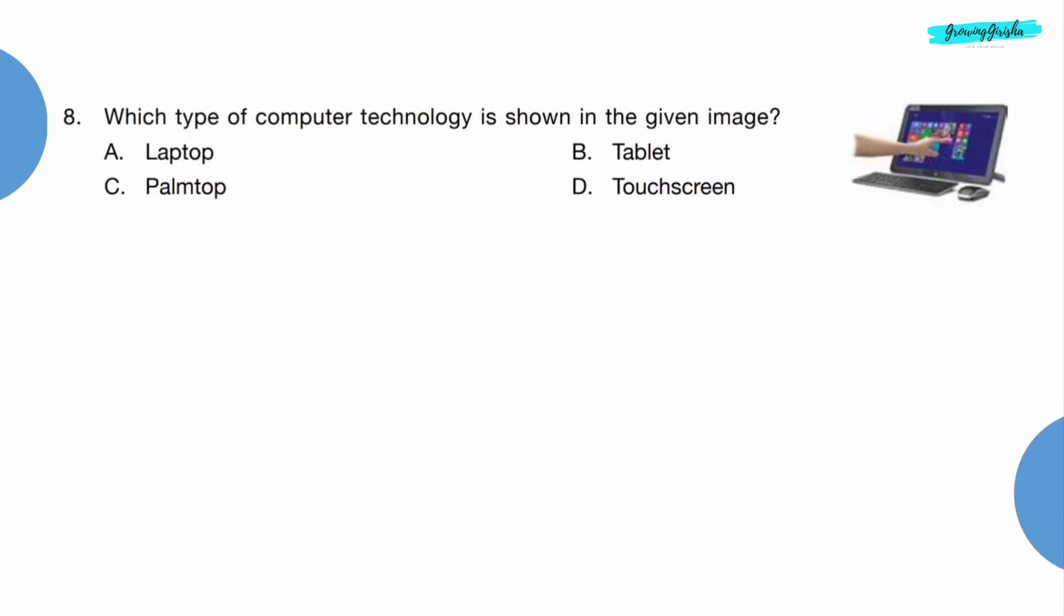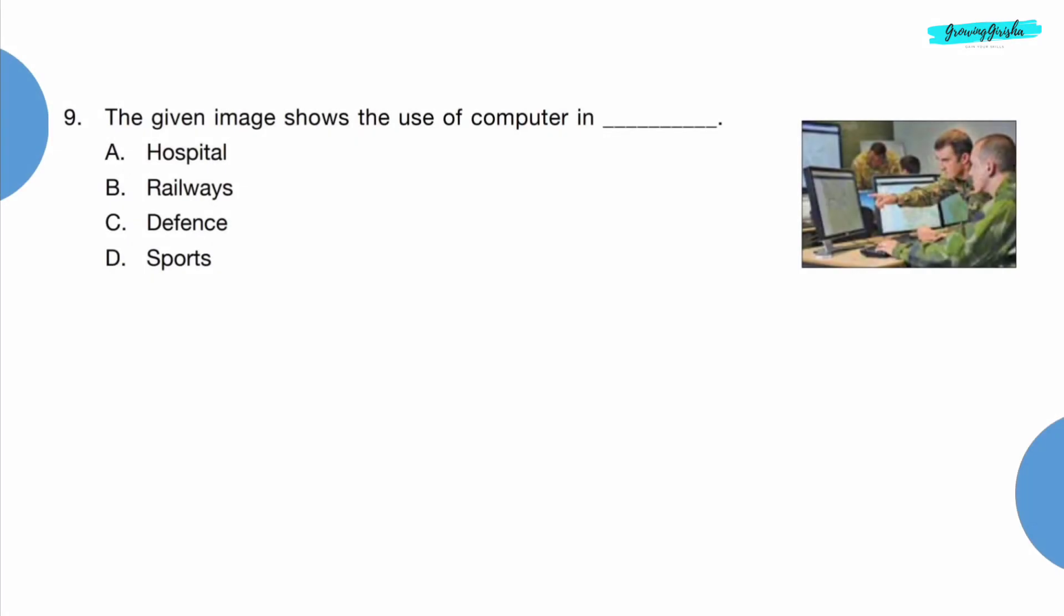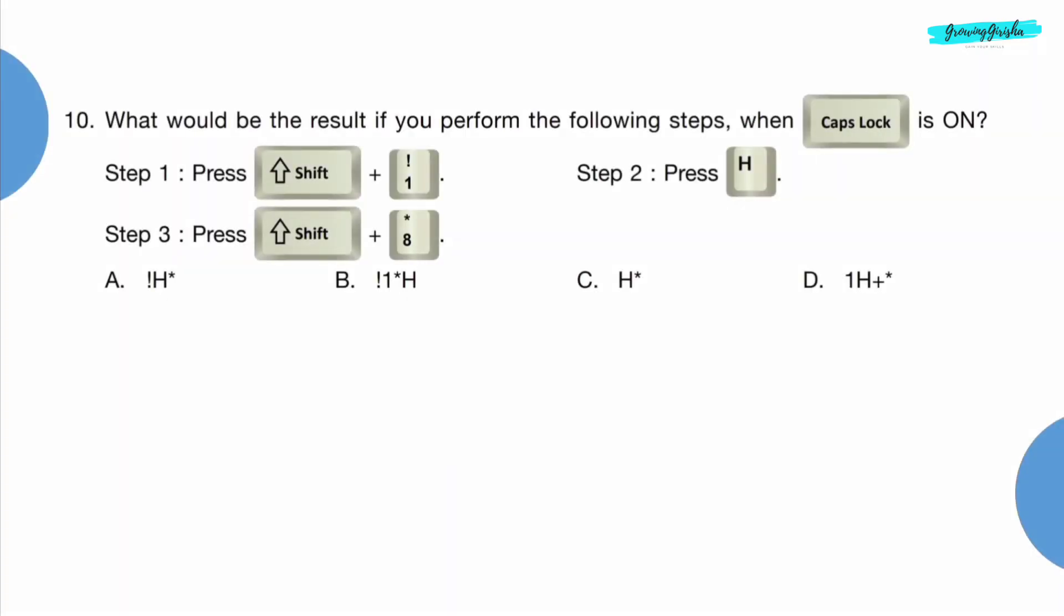Question 8: Which type of computer technology is shown in the given image? Option D, touchscreen. Question 9: The given image shows the use of computer in dash. Option C, defense.